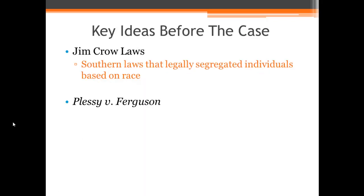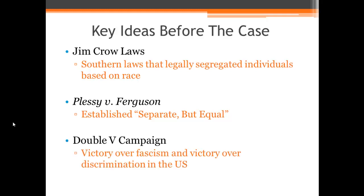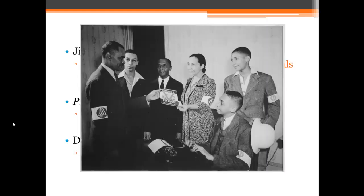Plessy v. Ferguson was a court case from 1896 — I have a video on that in the description I'd encourage you to review. This established the separate but equal doctrine, the idea that segregation is allowed as long as the facilities are equal, when in actuality these facilities rarely, if ever, were. During World War II, we have the Double V Campaign, which stands for Victory Over Fascism and Victory Over Discrimination in the United States. This was a campaign led predominantly by African Americans — Victory over fascism abroad and victory over discrimination at home.